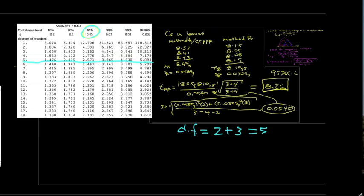So 95% confidence level t for the table is 2.571. And we know that the experimental value is 8.26, which is obviously much greater than the table value of 2.571.